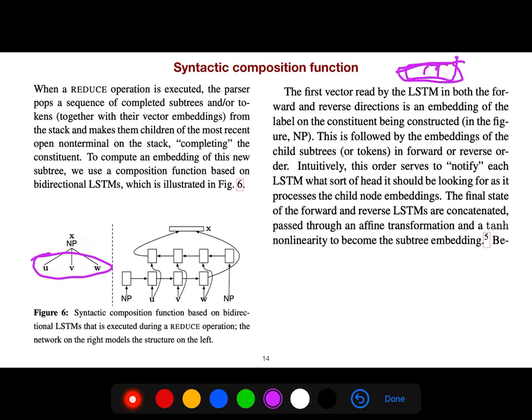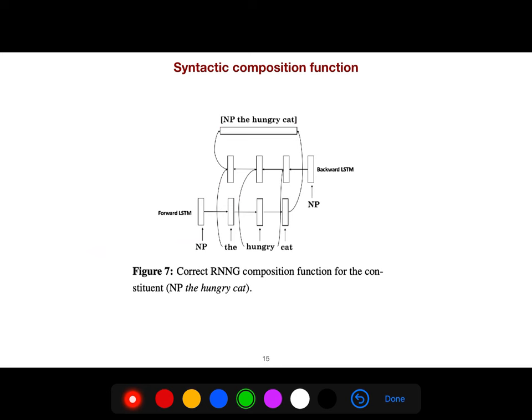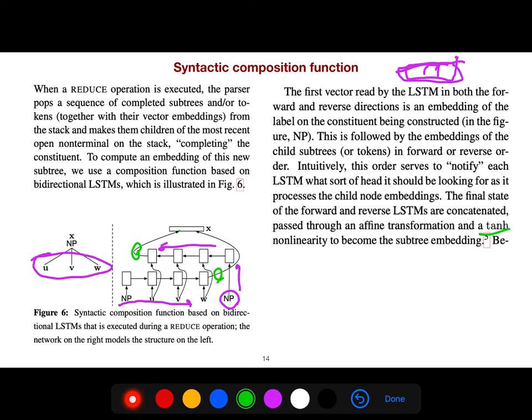So, in order to do that, they use a very interesting idea. They're using bidirectional LSTM, but they give this head to the backward, so the forward and backward are the same, but it picks this one from the backward. It takes this one from the forward, and then uses this tanh non-linearity, and then it becomes, so then it becomes a good embedding. This X is a good embedding of the whole subtree.